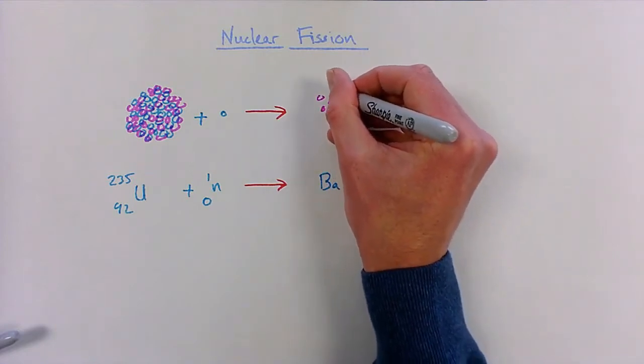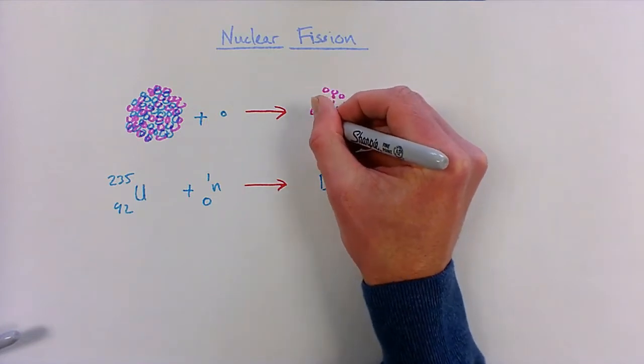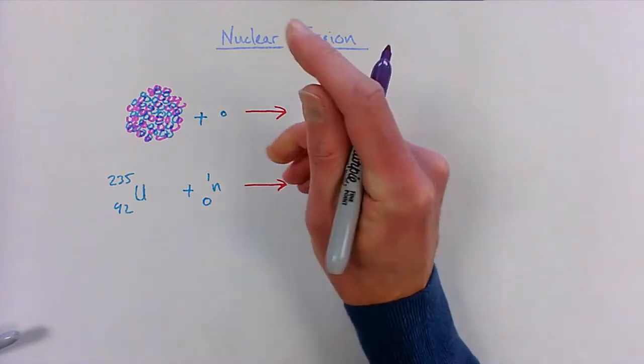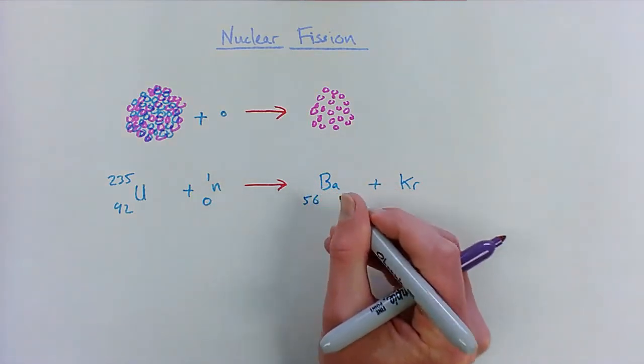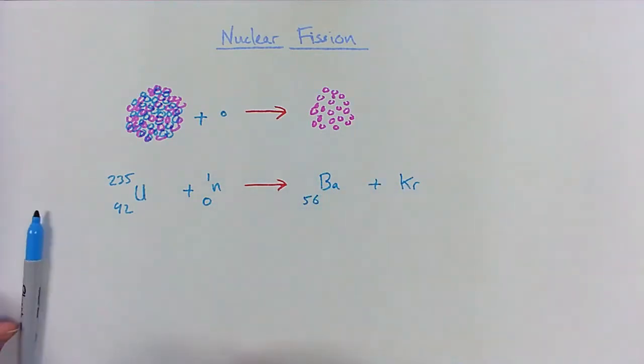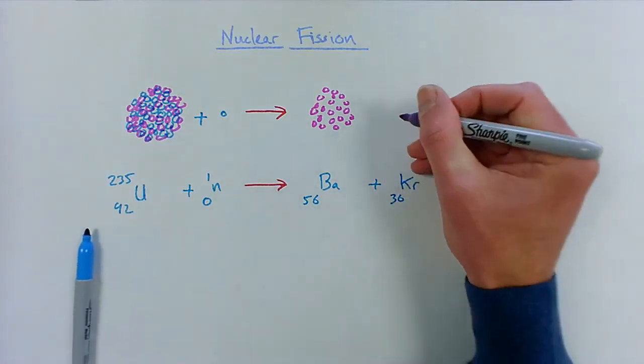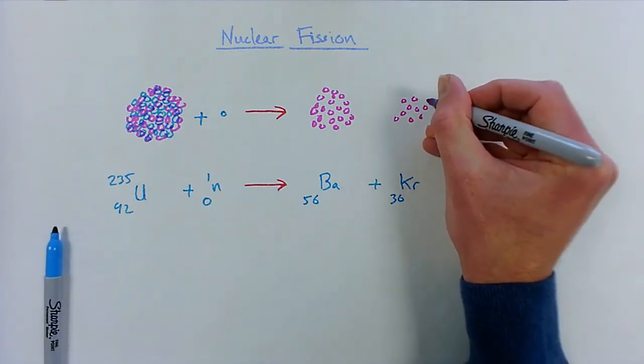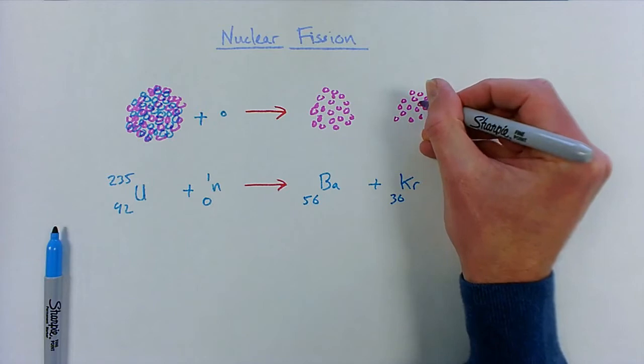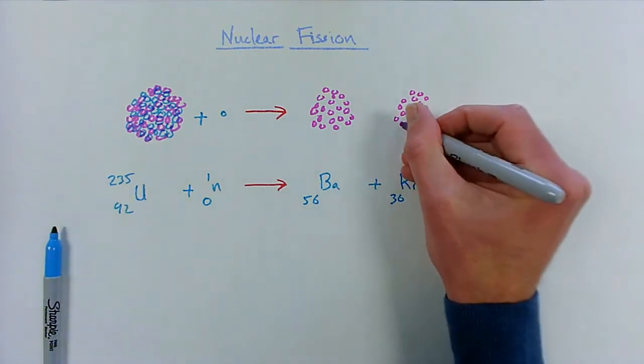In fact, barium will have 56 protons and krypton will have 36 protons. We should notice that our 56 plus 36 will balance here - good, that balances. So our proton number remains the same.